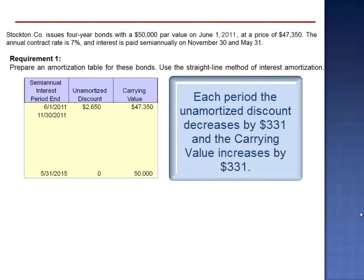So on November 30, 2011, we reduce the unamortized discount by $331 to $2,319. This increases the carrying value to $47,681. $2,319 minus $331 is $1,988. The carrying value is up to $48,012. November 30, 2012, $1,988 minus $331 is $1,657. The carrying value is $48,343.